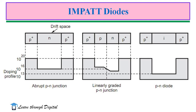IMPATT diodes have many forms, including N+ P-I-N+, P-I-N+, and other device structures with various doping profiles. Such diodes can be manufactured from Germanium, Silicon, Gallium Arsenide, or Indium Phosphide. However, Gallium Arsenide provides the highest efficiency, highest operating frequency, and least noise figure.